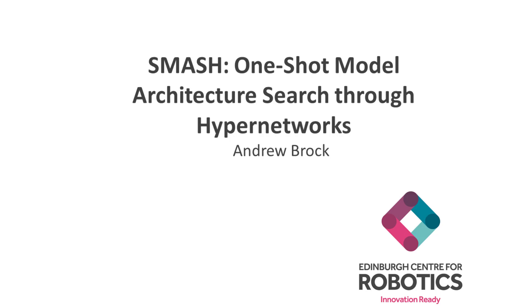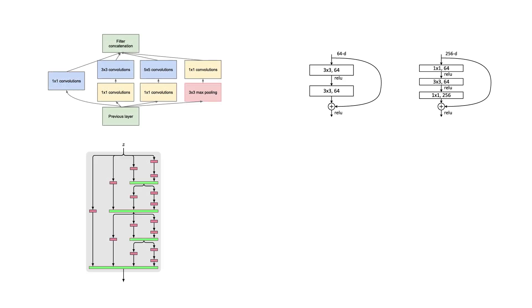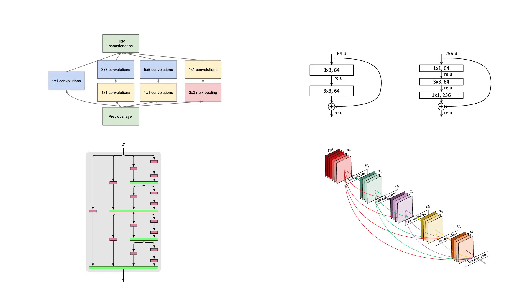Designing neural networks is difficult and time-consuming, and with the success of models like Inception, ResNets, FractalNets, and DenseNets, it's increasingly clear that there is value in sophisticated branching architectures.